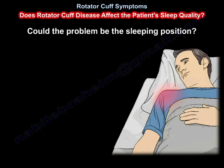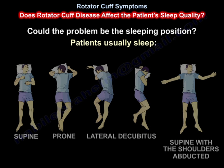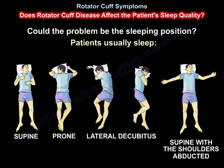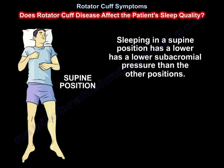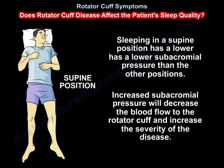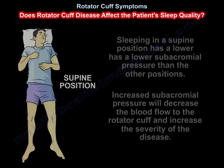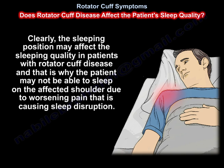Could it be the sleeping position? Patients usually sleep supine, prone, lateral decubitus, or supine with the shoulder abducted. Sleeping in a supine position has a lower subacromial pressure than the other positions. Increased subacromial pressure will decrease blood flow to the rotator cuff, which will increase the severity of the disease. Clearly, the sleeping position may affect sleep quality in patients with rotator cuff disease, and that is why the patient may not be able to sleep on the affected shoulder.